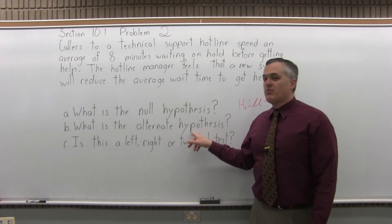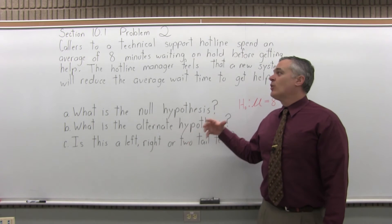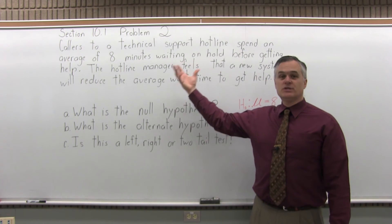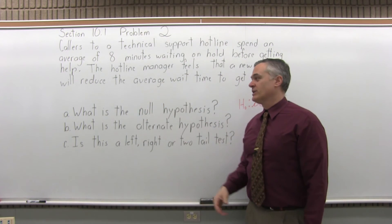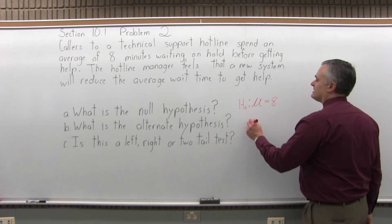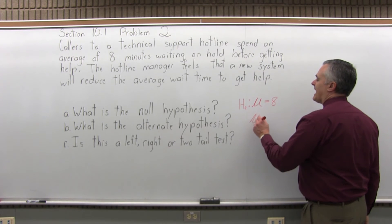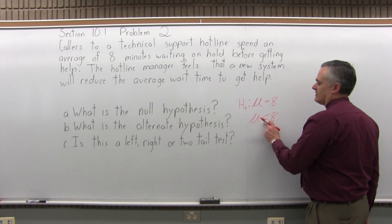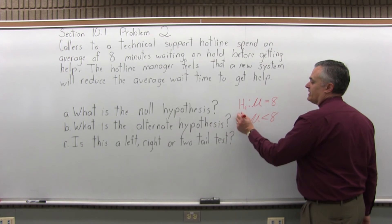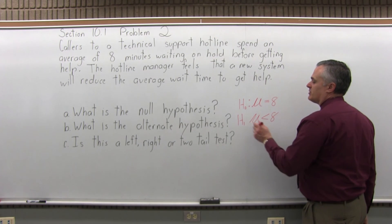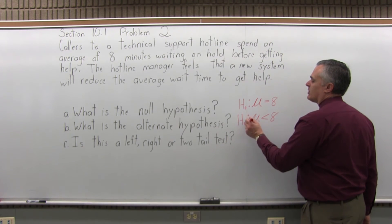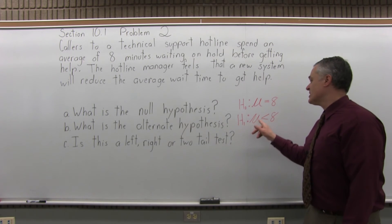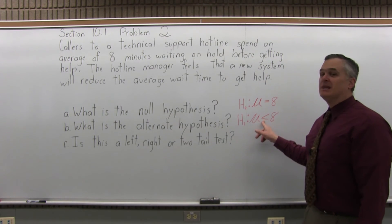What's the alternate hypothesis? What we want to test is that the average wait time reduces — people don't want to wait on hold when they're getting help. So you want to test to see if the average has now become less than 8. The alternate hypothesis symbol is a capital H with a subscript of 1 followed by a colon, so H₁: μ < 8.